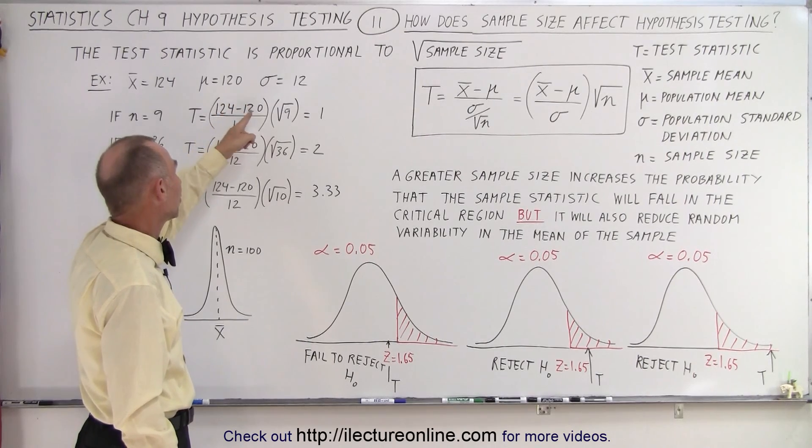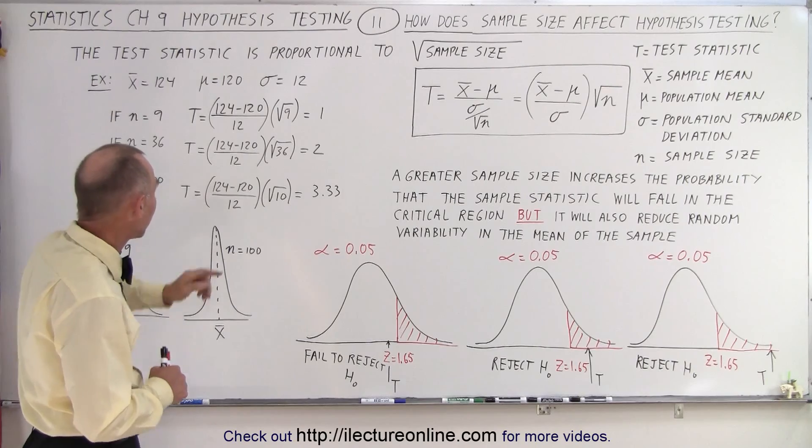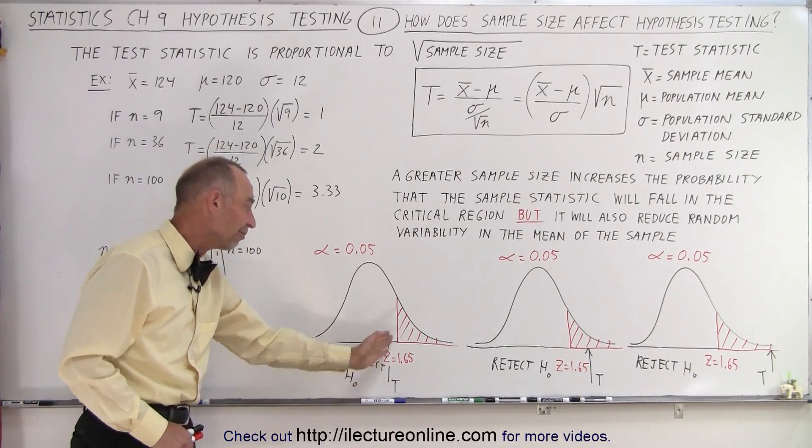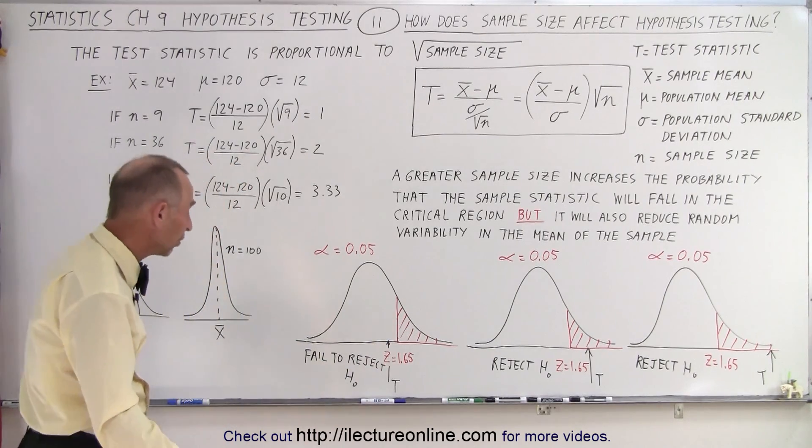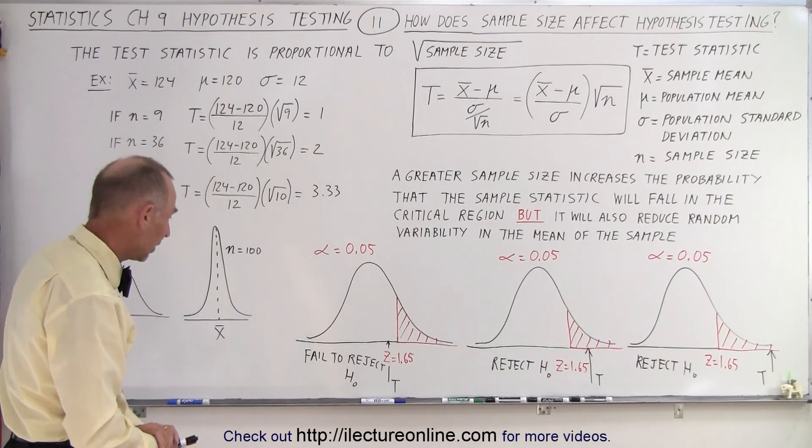Which is then divided by the standard deviation of the population. And we get a test statistic value equal to 1. Which means in this case it does not fall in the critical region. So therefore we fail to reject the null hypothesis.